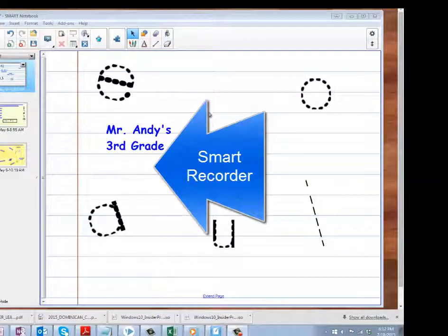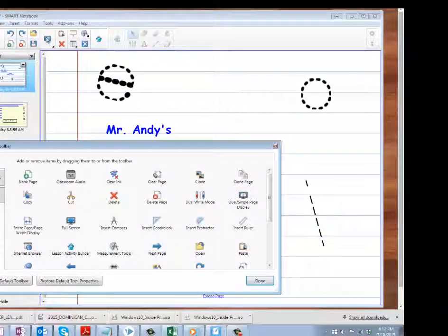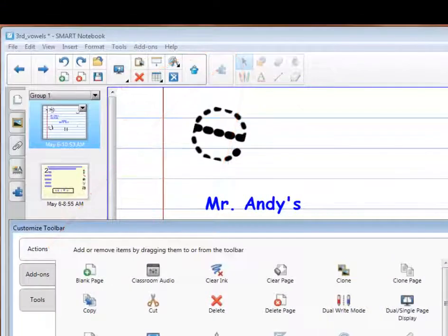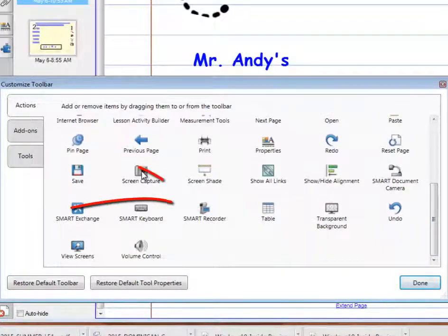The second way to get the recorder is right-clicking on this portion. If it's not here you'll see it. You click on an unused portion of your toolbar and SMART Board, and you scroll down until you find a picture of a video camera. Don't get confused by the screen capture, which is also a very useful tool, but I'm going to use the SMART Recorder here.